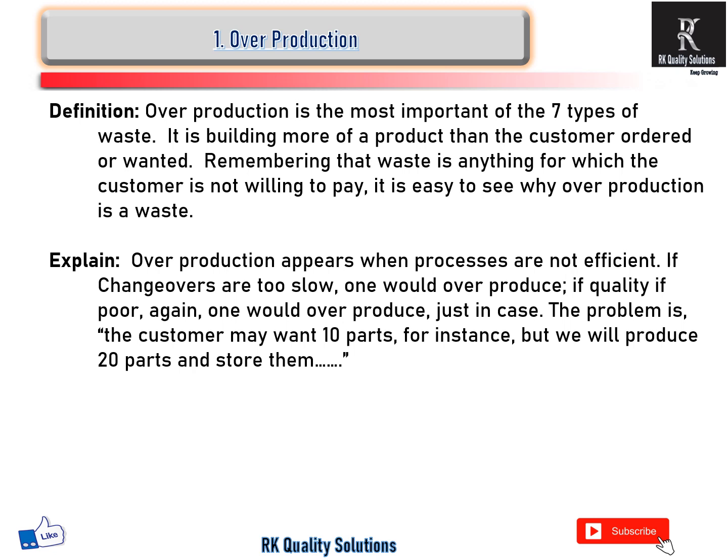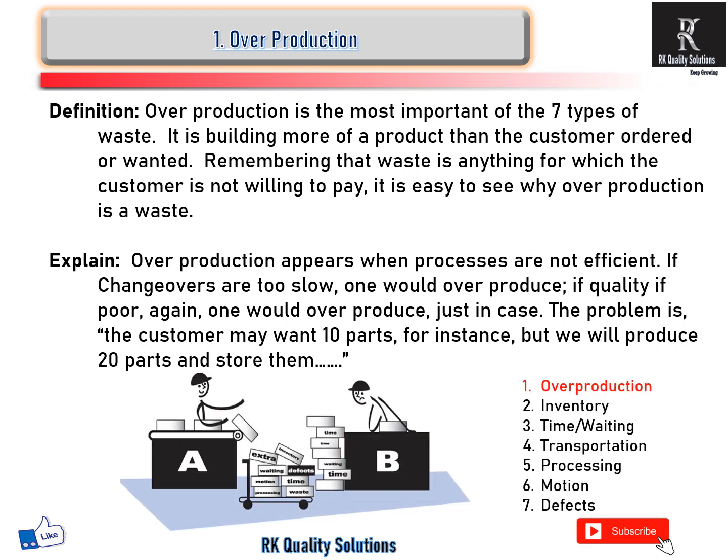First: Overproduction. Overproduction is the most important type of waste — it is the production of more product than the customer has ordered. The customer will not pay for waste. For example, the customer gave an order for 10 parts, but we produce 20 parts. Ten parts are dispatched but the remaining 10 parts are stored — those 10 parts are non-value. Any required expense that is not converted to value-added is a total waste.